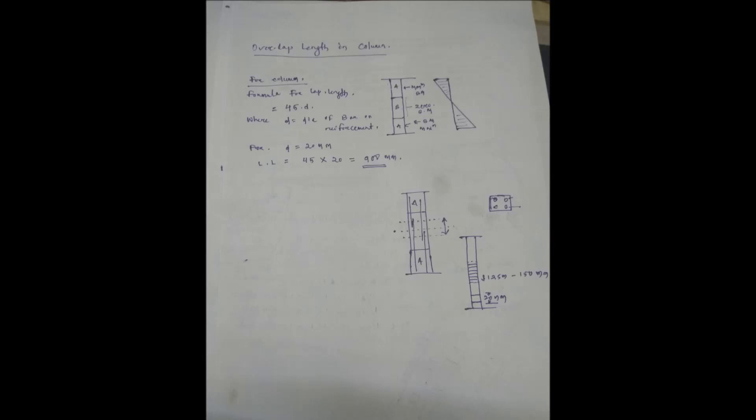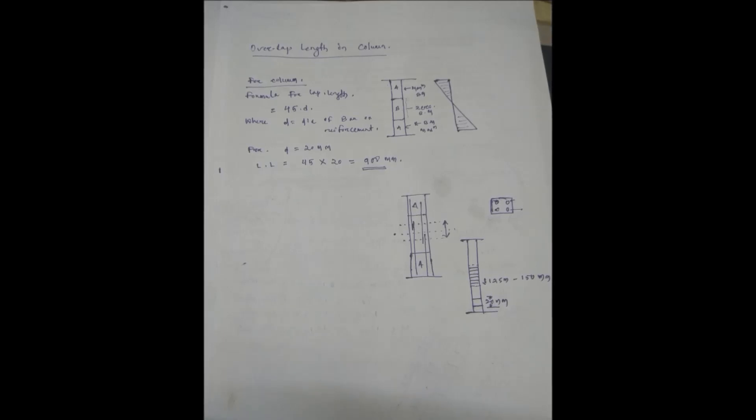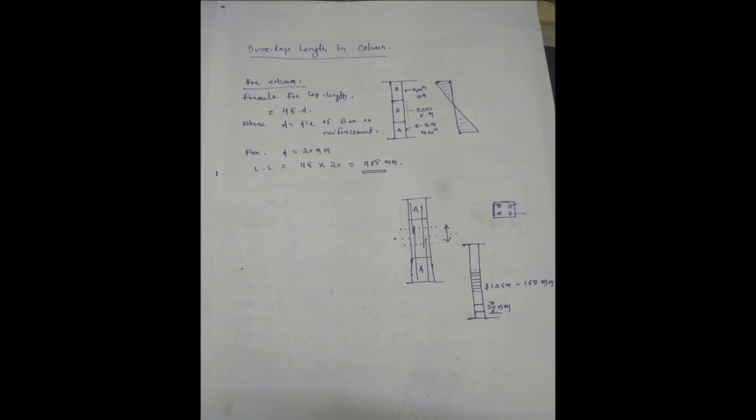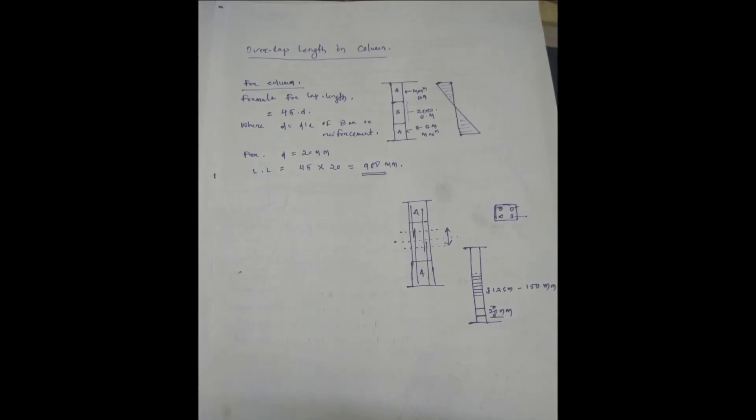all bars should not lie in the same plane. Suppose the column has four bars - first two corner bars should be lapped in one plane and other two corner bars should be lapped in another plane. We have to maintain a gap between two lapping positions within zone B so that the weak positions should not lie in one plane. For column, formula for lapping length is equal to 45D, that is 45 times diameter of the bar. For